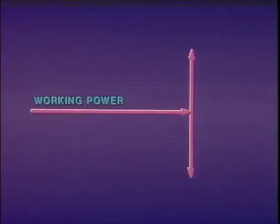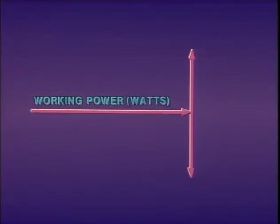The power in a transmission and distribution system generally includes both working power and non-working power. The relationship between working power and non-working power determines the efficiency of the power that is produced. We can show this relationship using a simplified illustration. In this illustration, working power is represented by the horizontal line and is measured in watts. Non-working power is represented by the vertical line.